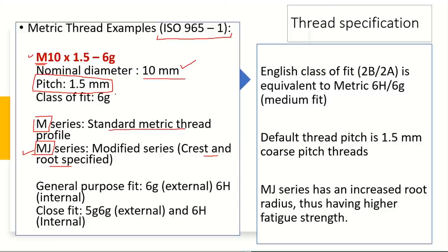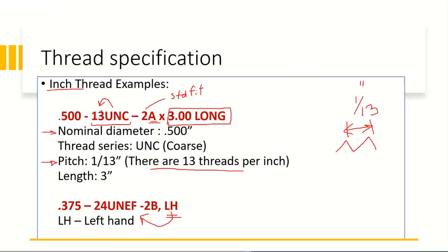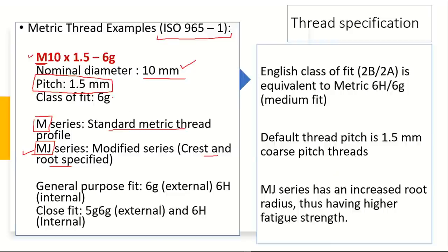Notice the difference in how pitch is reported for inch and metric systems. In the inch system, the number of threads per inch is indicated and the pitch must be calculated. However, in the metric system, the pitch is given directly as the distance between two consecutive crests. The class of fit is optionally provided. The metric system has a different class of fits compared to the English system; in this case, 6G is mentioned, which stands for a general-purpose fit for external fasteners.